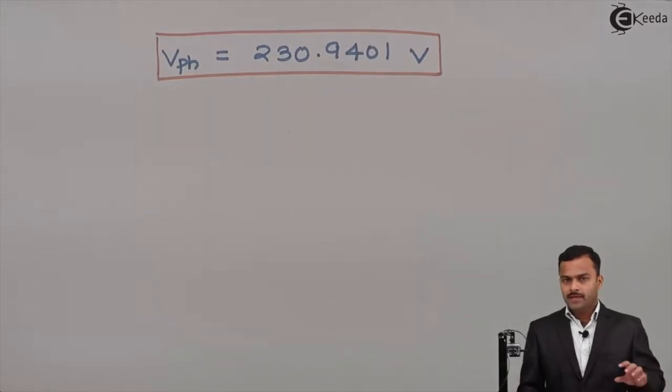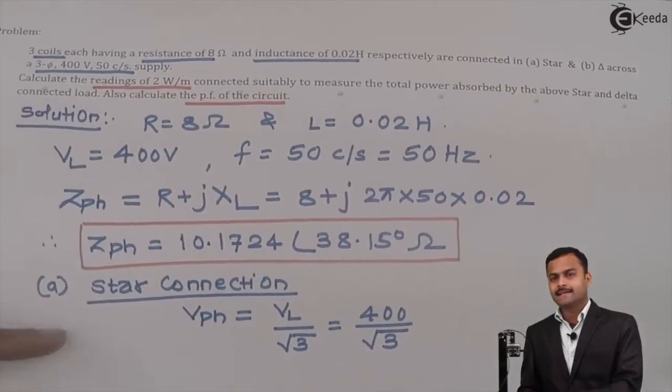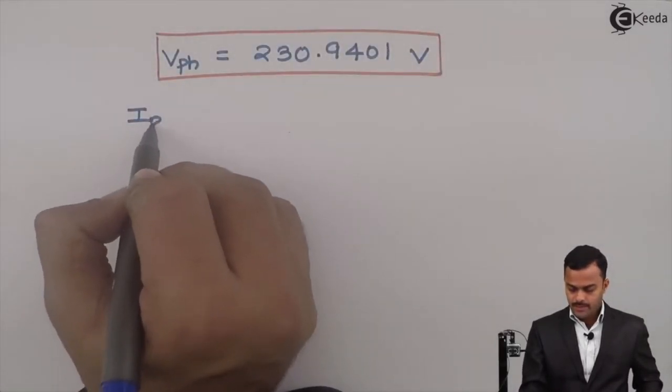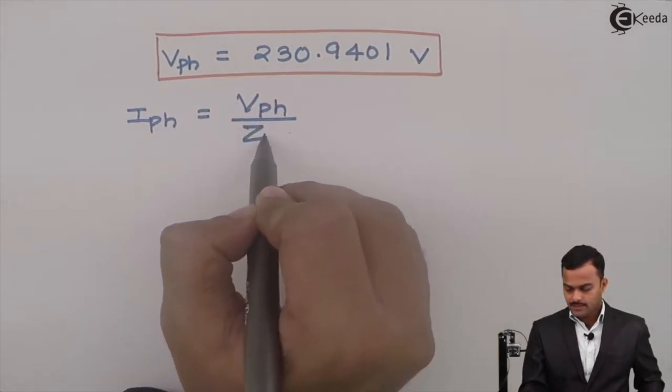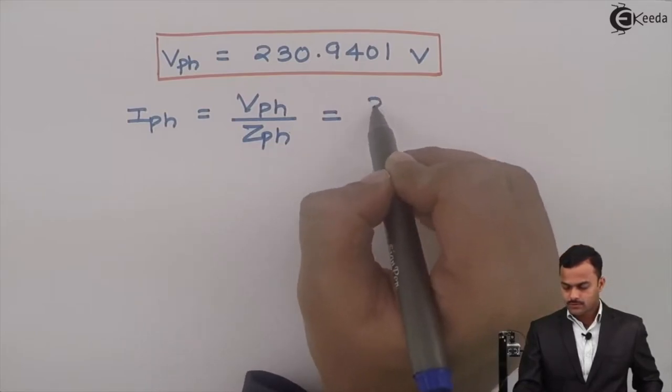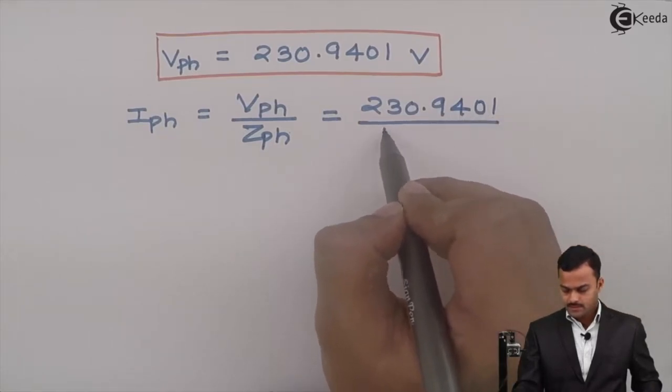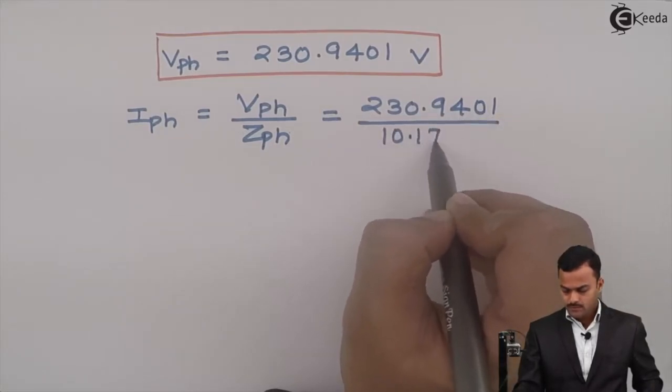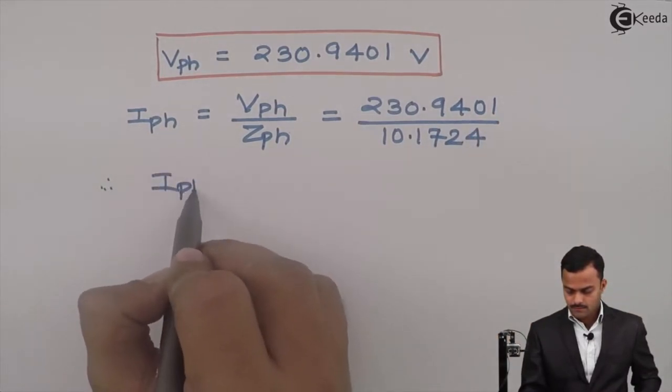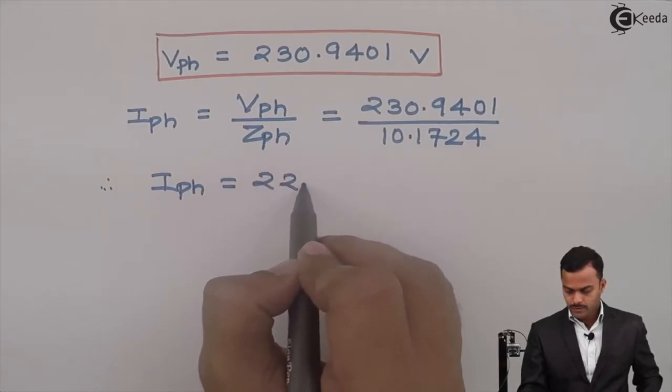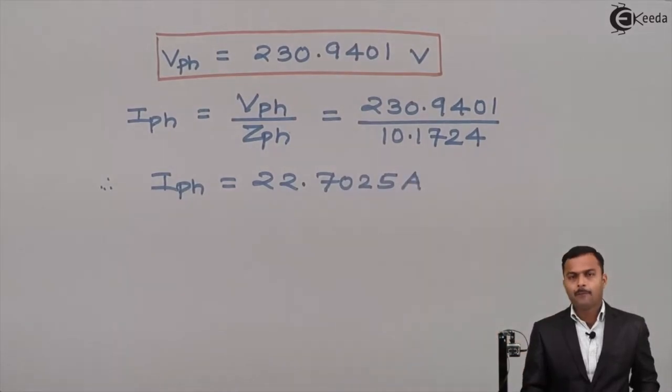Now Vph is calculated and Zph is known, so we can get Iph. Phase current Iph is nothing but Vph upon Zph. This equals 230.9401 divided by 10.1724, so Iph equals 22.7025 amperes.